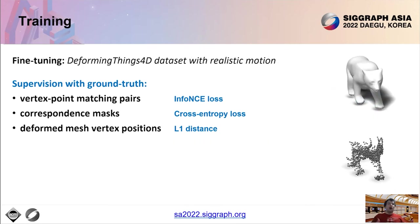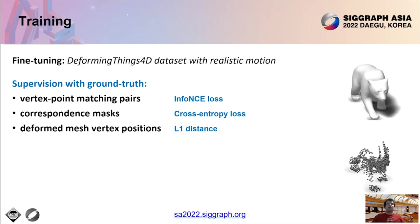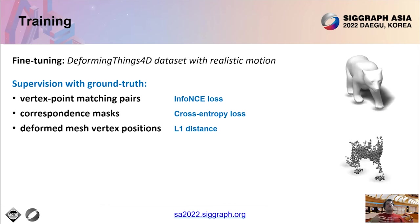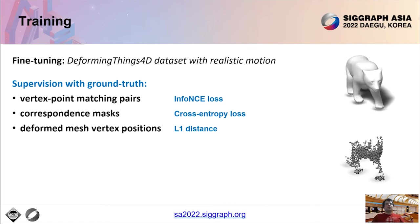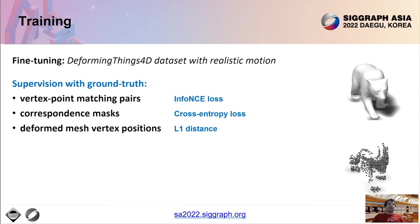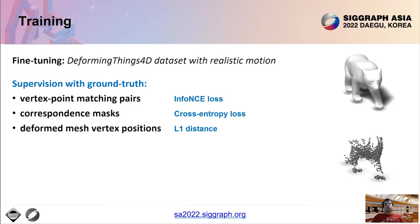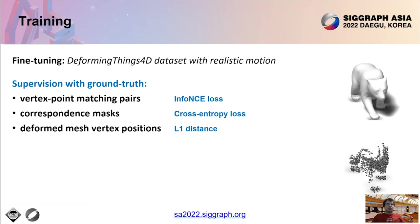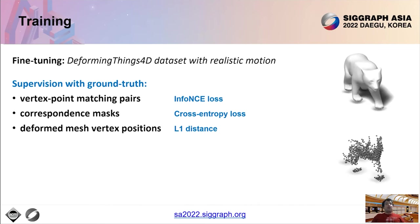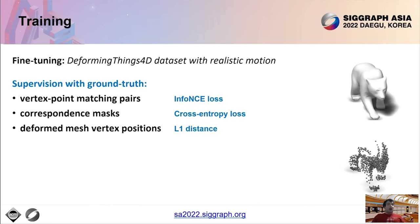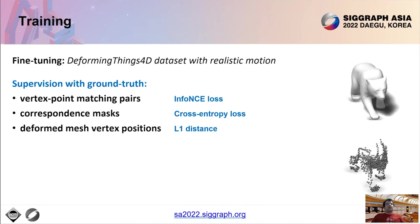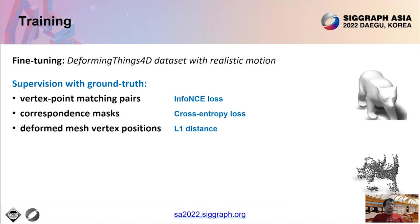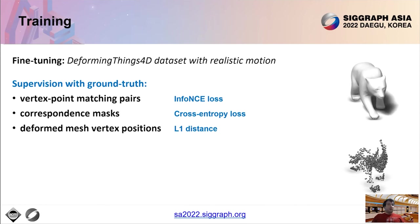We further fine-tune our pipeline on the DeformingThings4D dataset. Instead of randomly generated motion, this dataset contains realistic motion data from motion capture as well as artist animations. We simulate again point cloud captures and use the simulated vertex-point matching pairs, masks, and deformed vertex positions as supervision. The dataset does not have any ground-truth skeletons, therefore we do not use the rest of the losses.